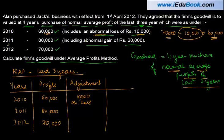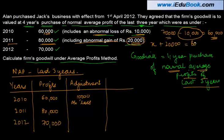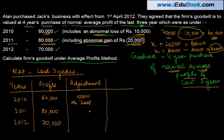Similarly for 2011, 80,000 is the profit reflected in the books, but this 80,000 includes an abnormal gain of 20,000. So my normal profit x was: 80,000 minus 20,000 equals 60,000. I reduce 20,000 from here, which is the abnormal gain.